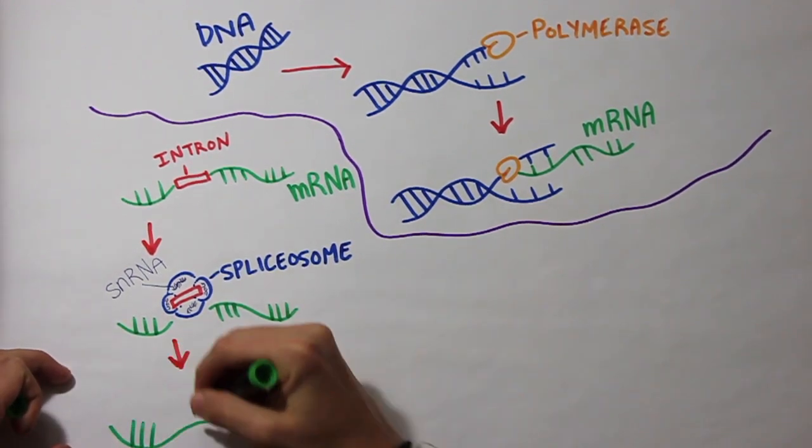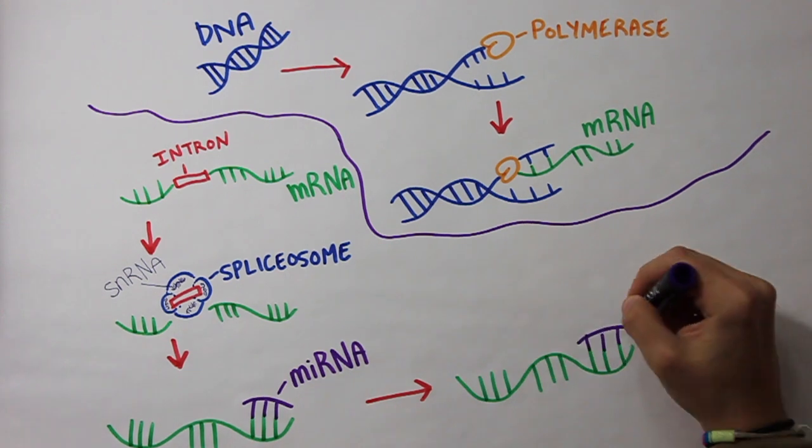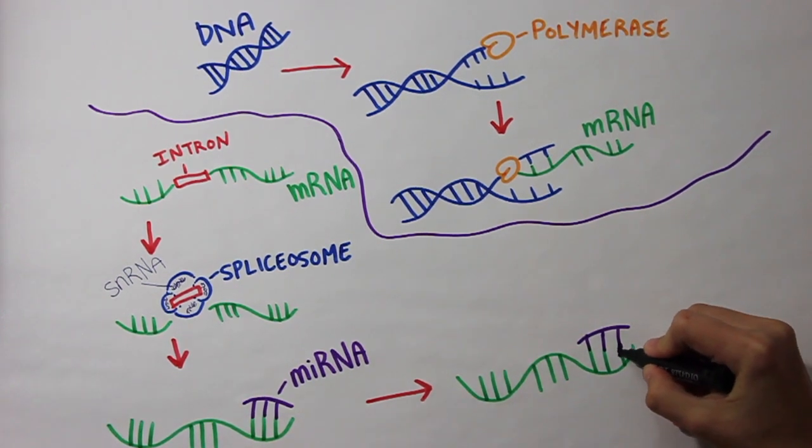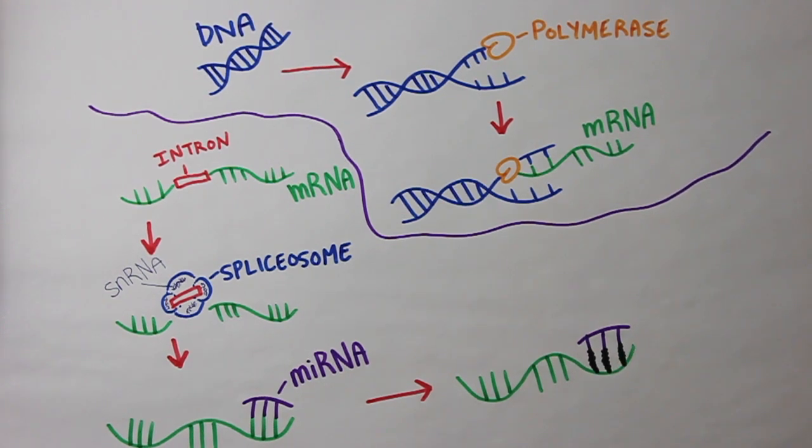Another non-coding RNA, called miRNA, binds to a specific target on the messenger RNA. This RNA does not always bind to messenger RNA, but if it does, it silences a gene, which prevents the gene from being expressed and prevents the messenger RNA from translating into a protein.